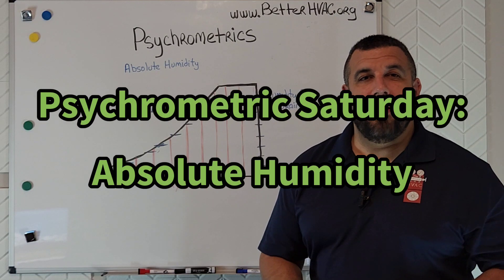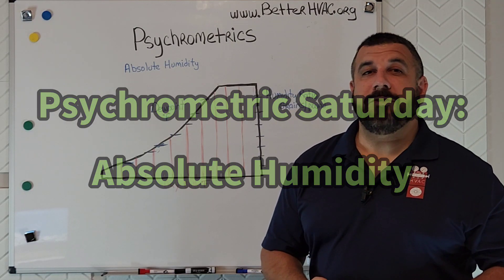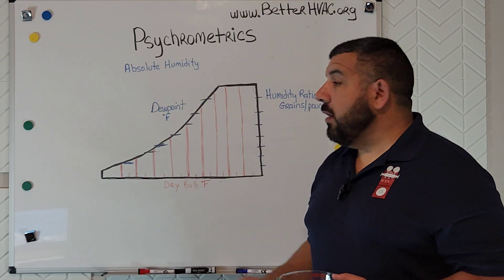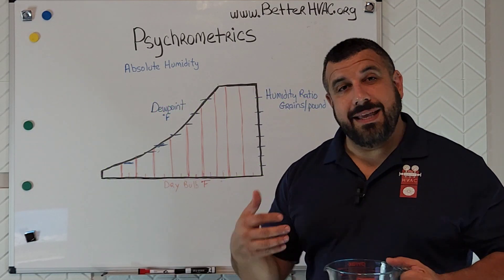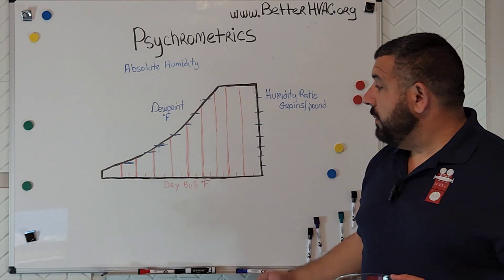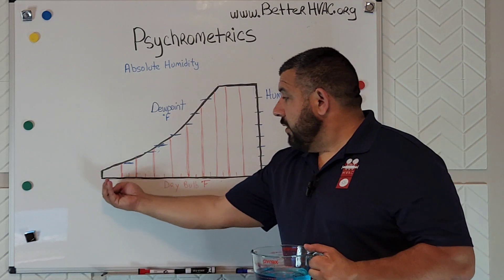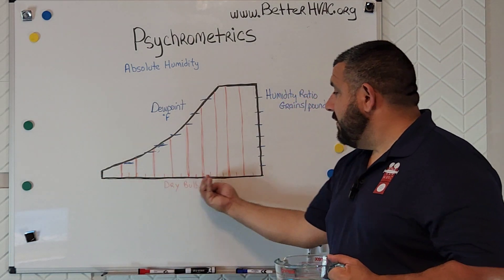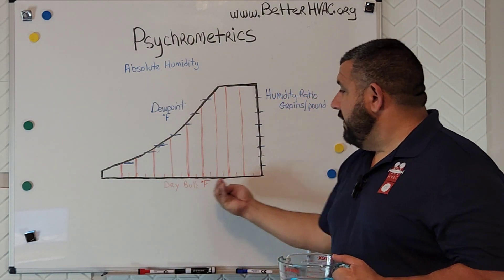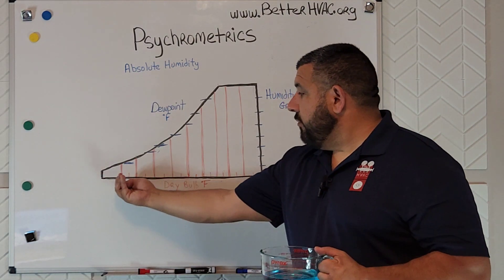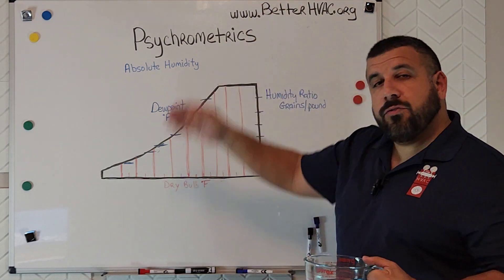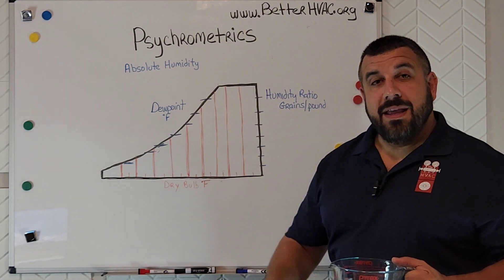Hey, Tim DeStasio here, and it is Psychrometric Saturday again. We've been talking about sensible heat and dry bulb temperature. We've talked about how it is the x-axis, where these tick marks go from left to right, and the lines go straight up and down.